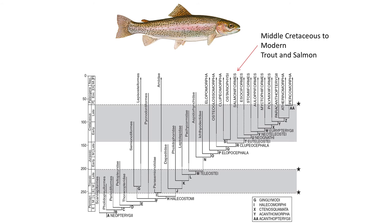The next group are the trout and salmon, within a group called the Salmoniformes. They have a fossil record extending to the Cretaceous, although most fossils are post-Paleocene. The Salmoniformes feature cycloid scales, and in some groups the premaxilla becomes hook-like, while the maxilla has reduced teeth and is slightly mobile. Teeth are found on the tongue as well as on the vomer in the roof of the mouth.